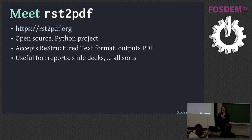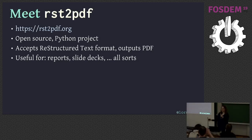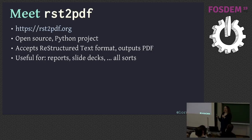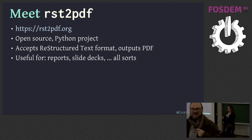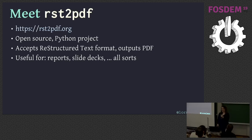Let me introduce you to RST to PDF. It is an open-source project, it's written in Python, which is clearly the best language. It's a tool that accepts a text-based markup format called restructured text, and outputs PDF. I use this for all kinds of stuff — basically anything that needs to look nice but doesn't need to be edited, and perhaps really must not be edited, such as your CV or resume if you're sending it to a recruiter.